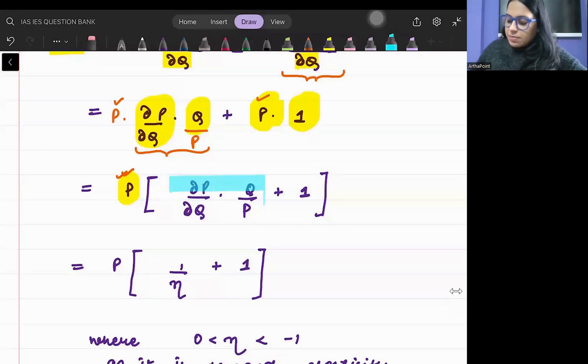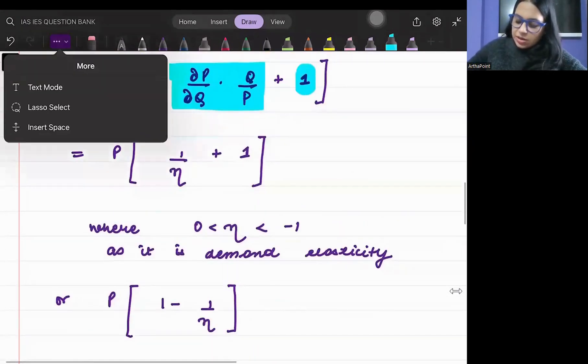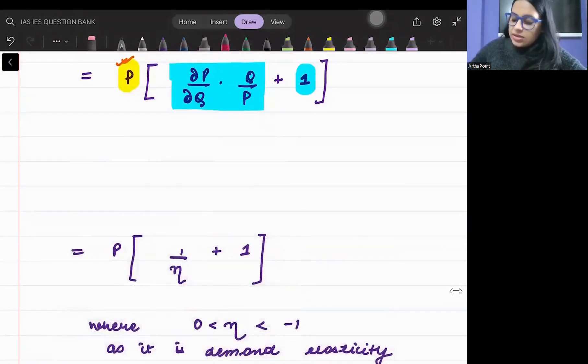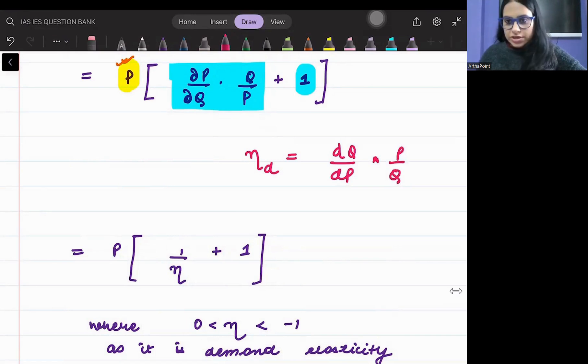I will get P times (del P by del Q times Q by P plus 1). Now understand that the elasticity of demand formula is how quantity changes as price changes times initial price by initial quantity. This is the reciprocal, so this is nothing but one by elasticity of demand. And this P comes here.